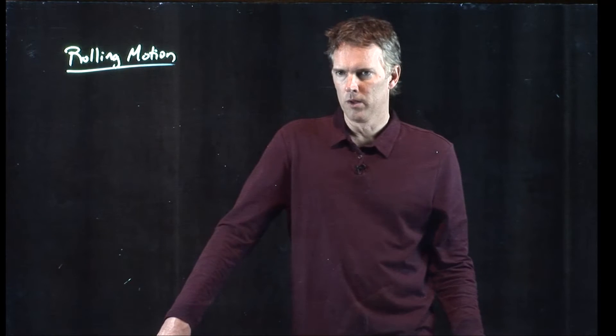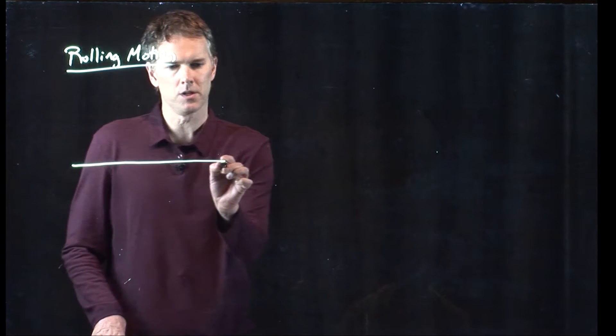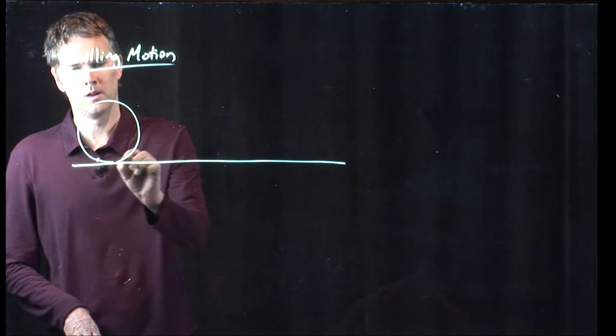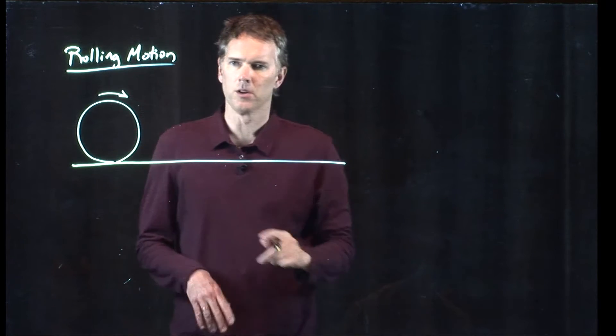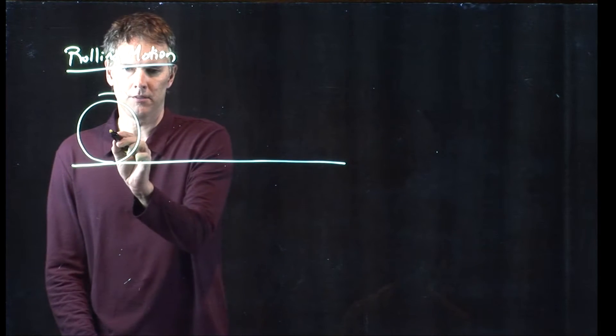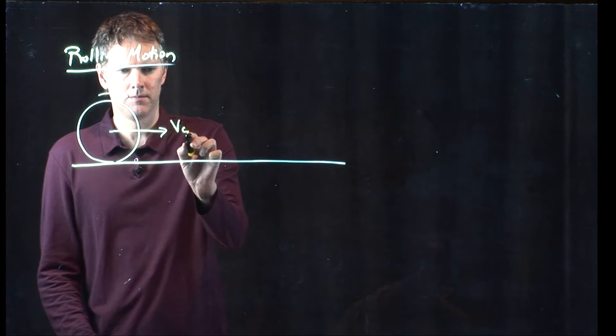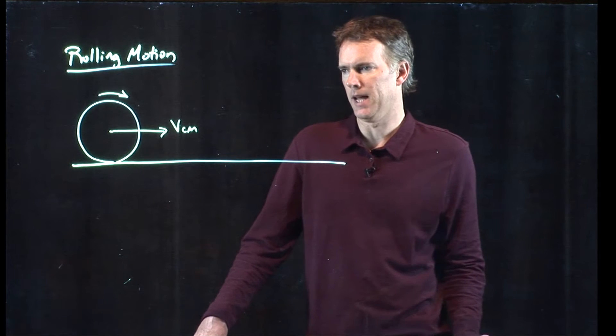All right, let's talk a little bit about rolling motion. We're going to take a wheel and send it rolling down the road. It's going to be spinning around and also moving in that direction, and that speed is the velocity of the center of mass.